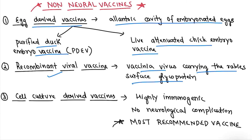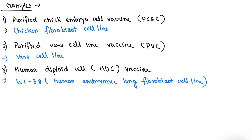The third type is cell culture-derived vaccines. These are the most important vaccines for rabies — highly immunogenic, with no neurological complications, and the most recommended vaccines in use today. The first example is Purified Chick Embryo Cell vaccine (PCEC), derived from chicken fibroblast cell line.